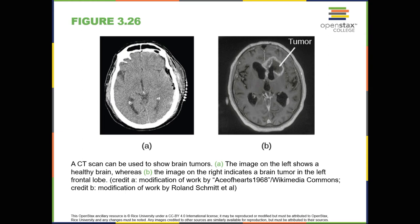Brain imaging. You've learned how brain injury can provide information about the functions of different parts of the brain. Increasingly, however, we're able to obtain that information using brain imaging techniques on individuals who have not suffered brain injury. In this section, we take a more in-depth look at some of the techniques that are available for imaging the brain, including techniques that rely on radiation, magnetic fields, or electrical activity within the brain. Techniques involving radiation. A computerized tomography, or CT scan, involves taking a number of x-rays of a particular section of a person's body or brain, as shown in figure 3.26.